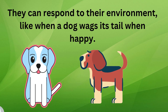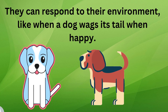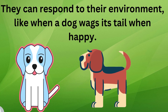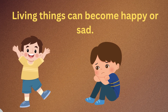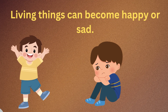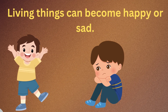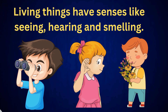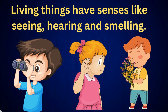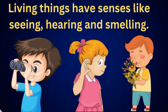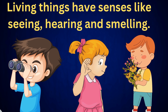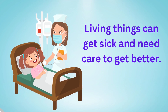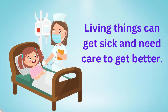Living things can respond to their environment, like when a dog wags its tail when happy. Living things can become happy or sad. They have senses like seeing, hearing, and smelling. Living things can get sick and need care to get better.